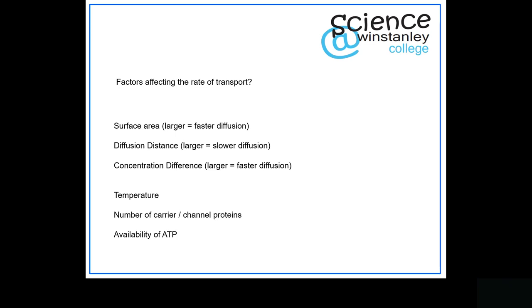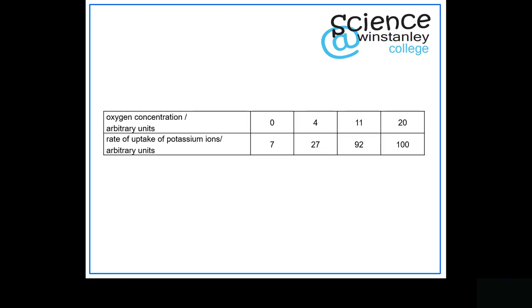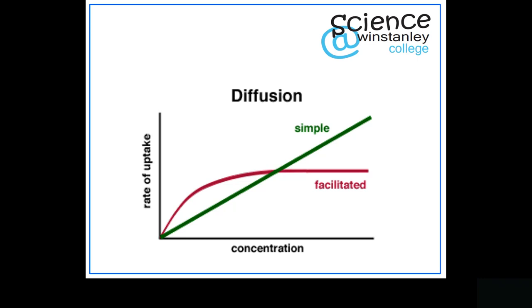What I'd like to do is take each of these points and each of the types of transport and walk through them, thinking about in what conditions they would have an effect. To help with that I'm going to go through two examples taken from exam papers, focusing on the graphs and tables that come with them.